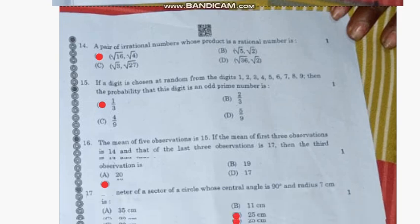Question number 14: A pair of irrational numbers whose product is a rational number is—the correct answer is option A, √16 and √4.